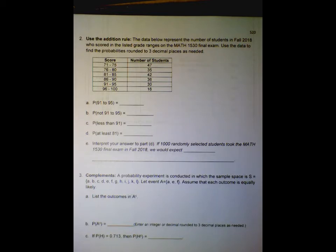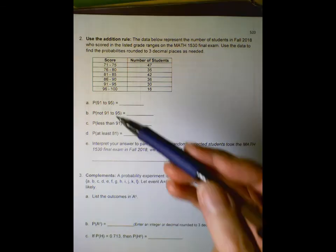This is a continuation of Section 5.2 on the addition rule and complements. In number two, we're going to use the addition rule and complements to solve some probabilities. The data below represent the number of students in Fall 2018 who scored in the listed grade ranges on the MATH 1530 final exam. We have different grade ranges and the number of students in each category.